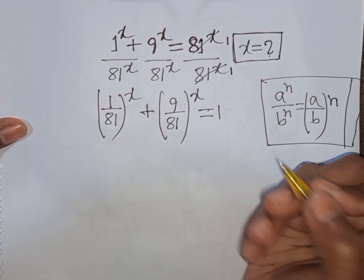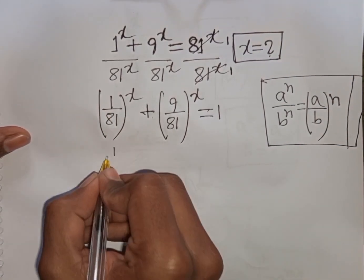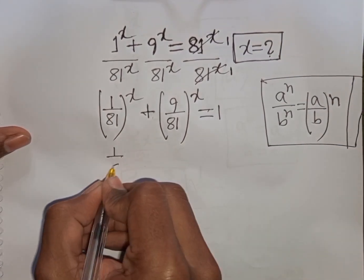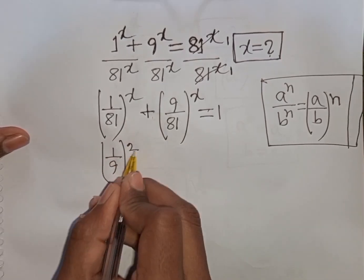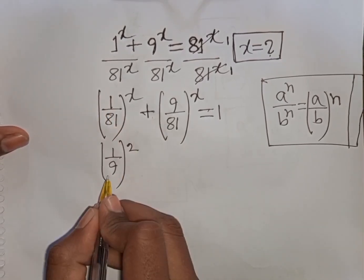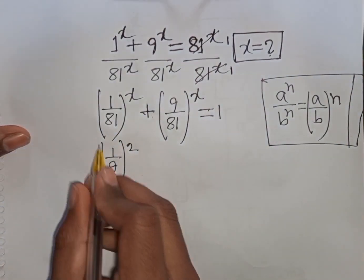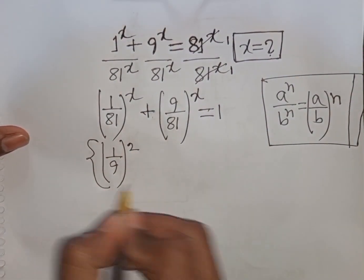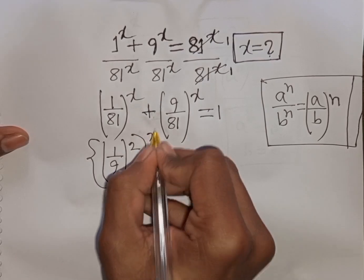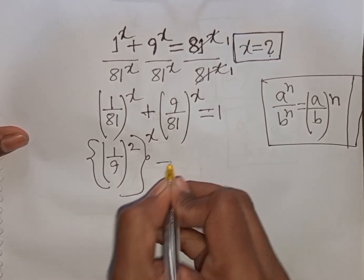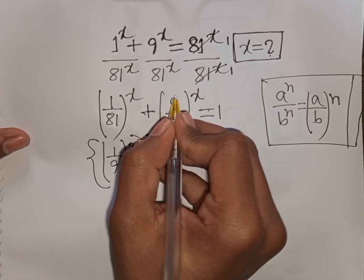Now 1/81 can be written as (1/9)^2, since 1^2 = 1 and 9^2 = 81. So the first bracket can be written as the second bracket to the power of 2, then to the power of x.